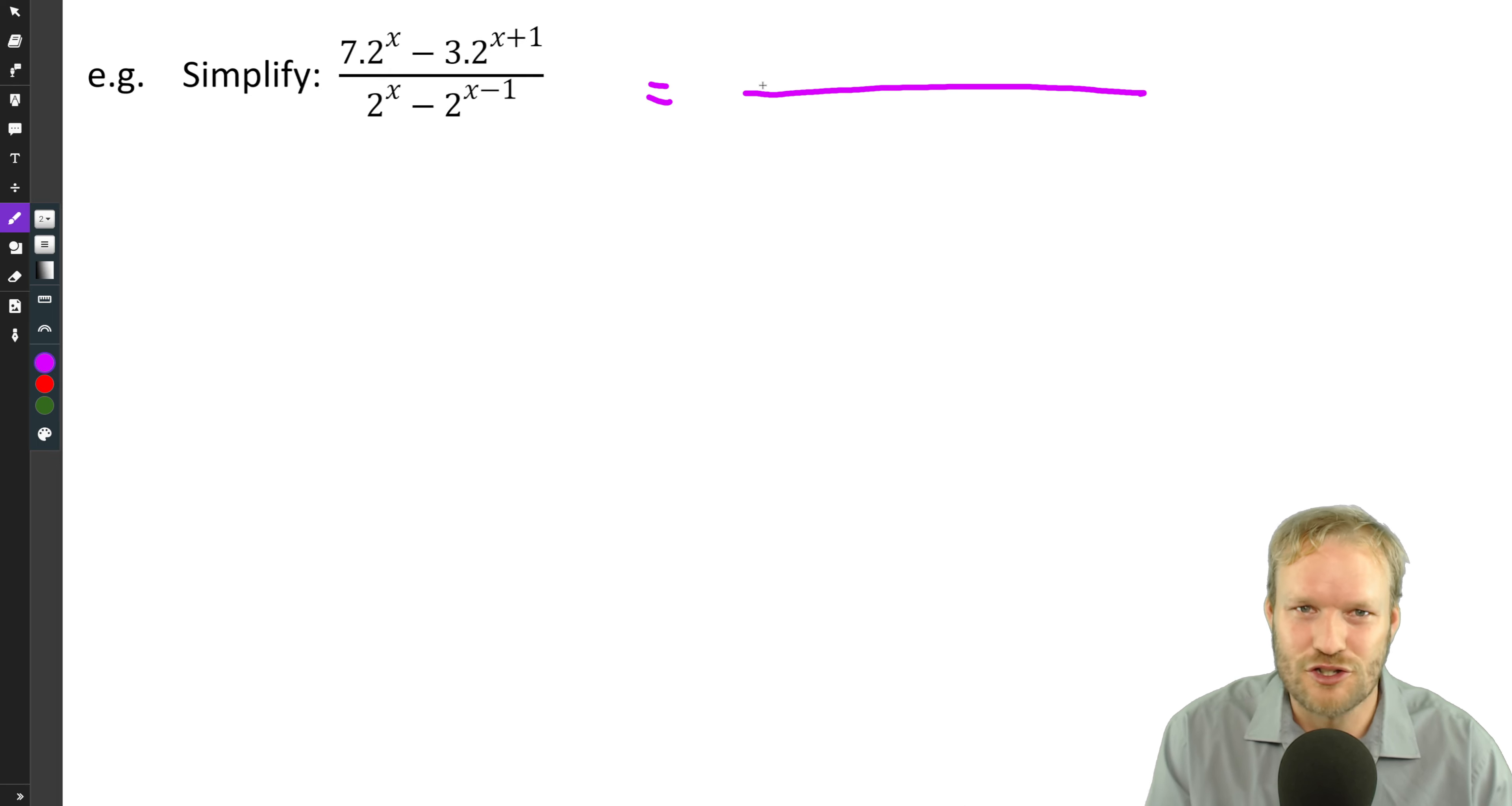I'm going to write this out. I'm just going to split everything up so that it's just got one term in each exponent. So seven times two to the x minus three times two to the x times two to the one. So we've just split it up into its separate components.